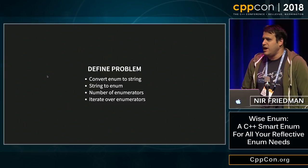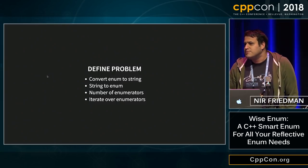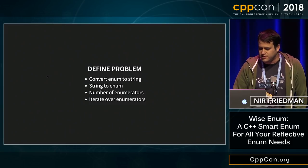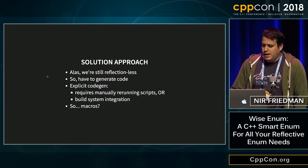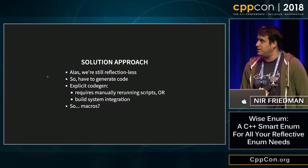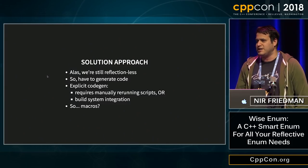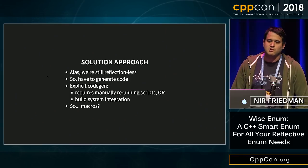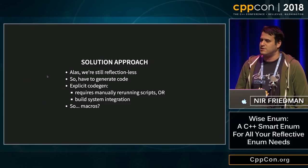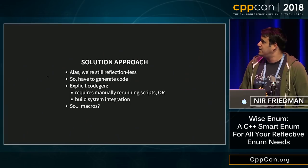So what is the problem? We have an enum. We'd like to be able to turn it into a string, turn strings back into our enums, and iterate over them and know how many there are. That's basically it — very useful, and not that easy to find a library that does all that properly. A lot of libraries have all kinds of issues: some use X macros, some assume that all enum values go from zero, one, two — all kinds of different problems.